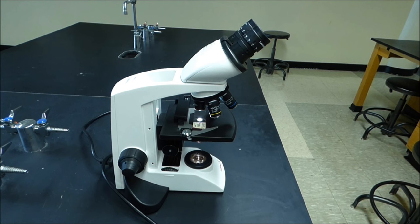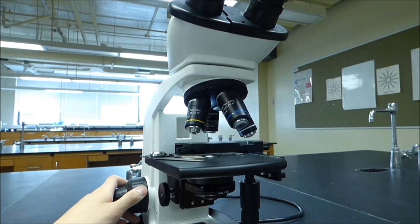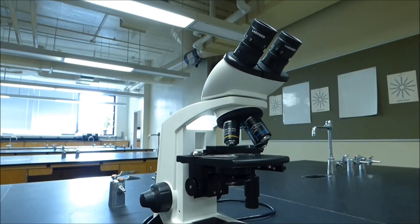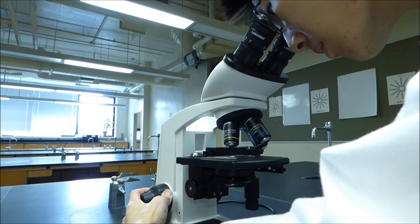Now that we are at the lowest magnification with our slide properly clipped onto the stage, we can actually begin magnifying our specimen. Use the coarse adjustment knob to raise the stage as high as possible while watching from the side. Now, looking through the ocular lens, lower the stage using the coarse adjustment knob until the specimens are in focus.